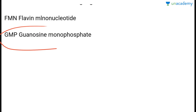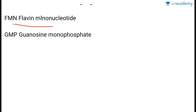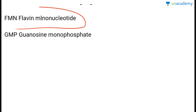FMN means flavin mononucleotide. GMP means guanosine monophosphate. Remember these as they can come up in medical examination questions — FMN is flavin mononucleotide and GMP is guanosine monophosphate.